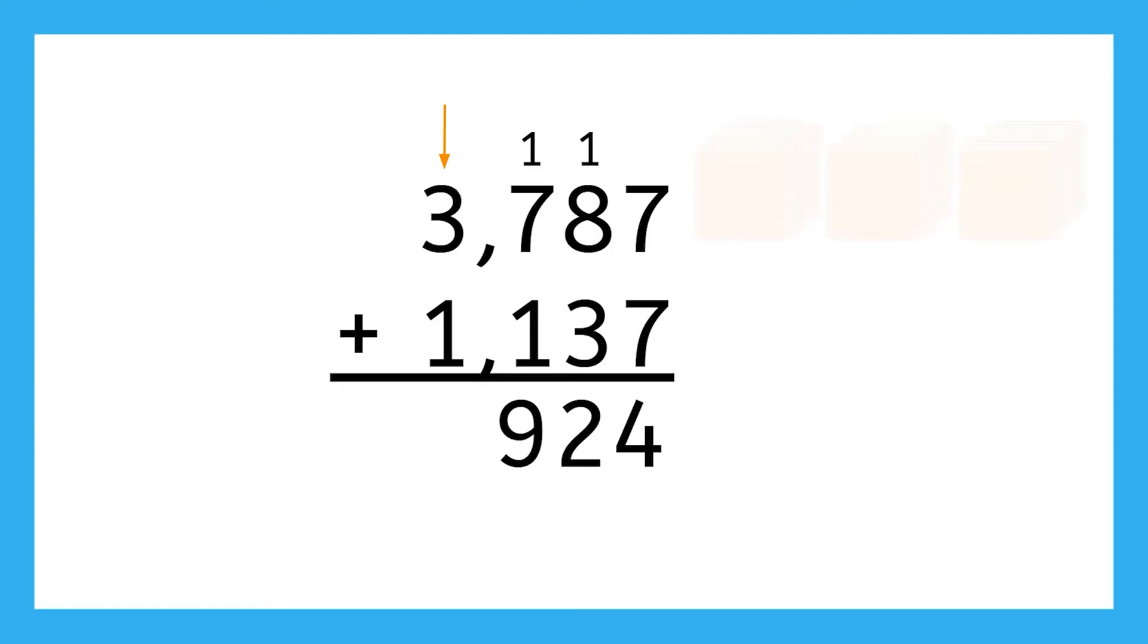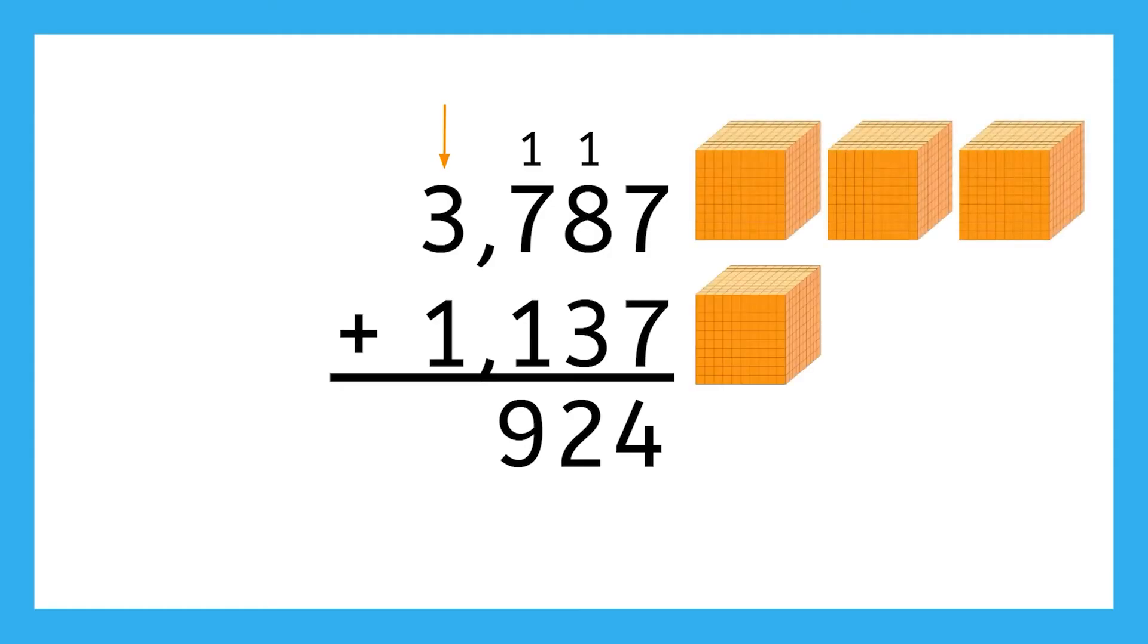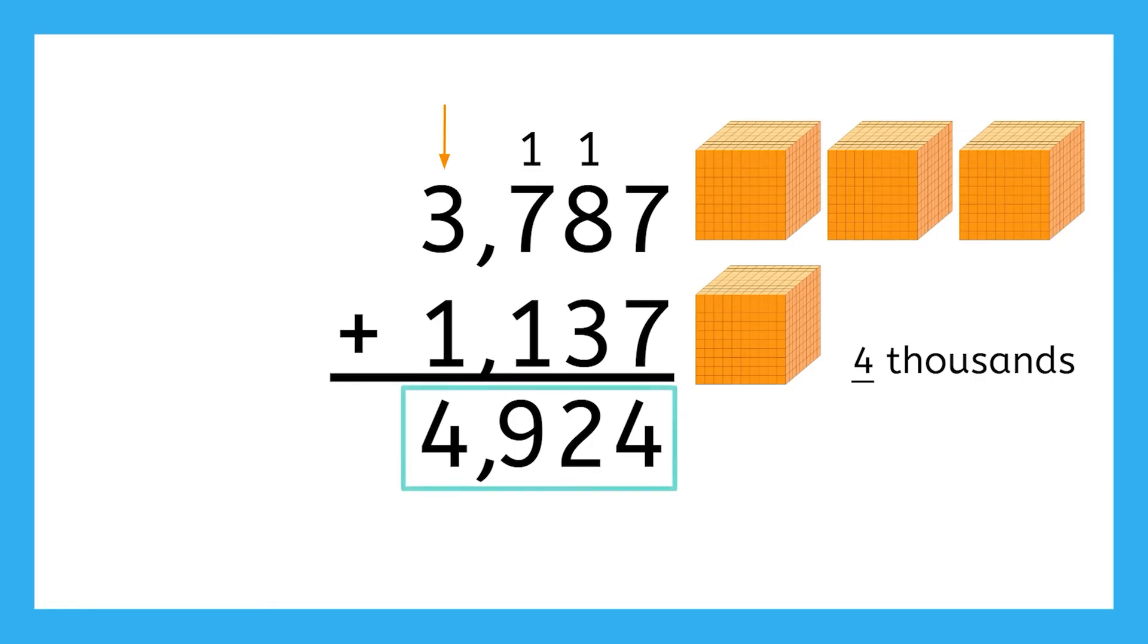Moving on to the thousands, we have three thousands plus one thousand. This equals four thousands, another one-digit number, which we can record in our thousands place, for a total cost so far of four thousand nine hundred twenty-four dollars.